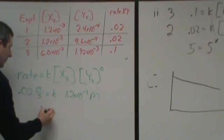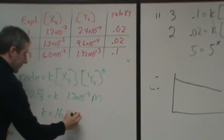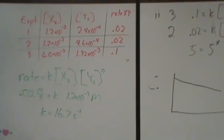So my k will be equal to this 0.02 divided by this. That comes out to 16.7. And the units are seconds to the minus 1.